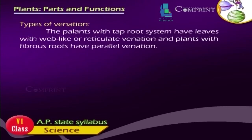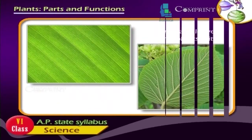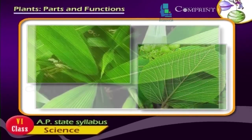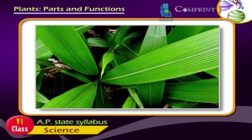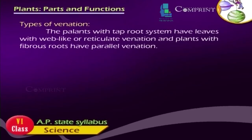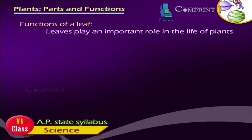Types of venation. Plants with a tap root system have leaves with web-like or reticulate venation, and plants with fibrous roots have parallel venation.